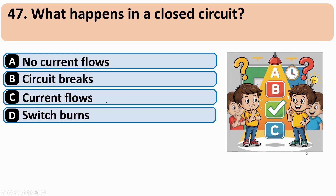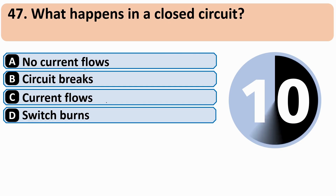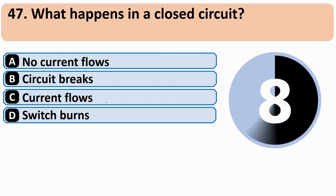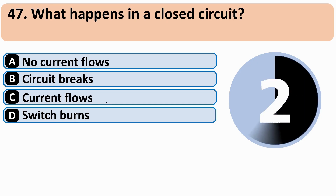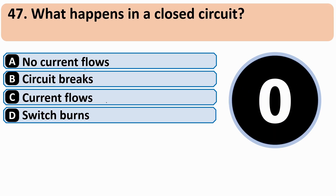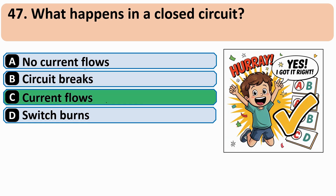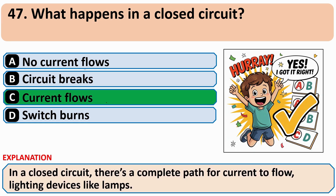What happens in a closed circuit? The correct answer is C: Current flows.